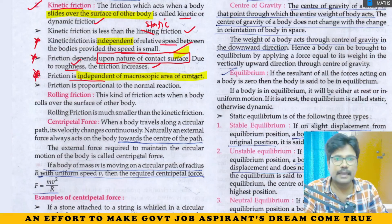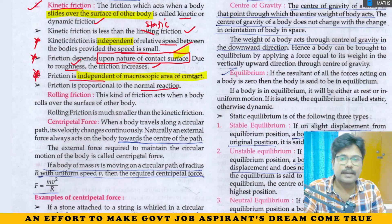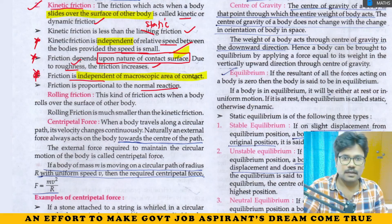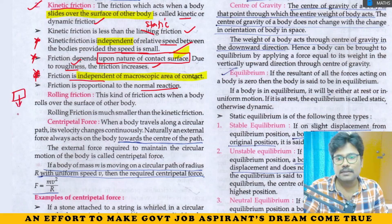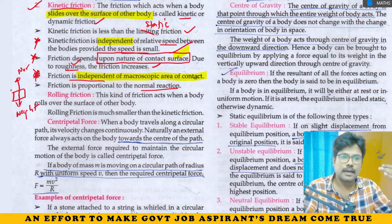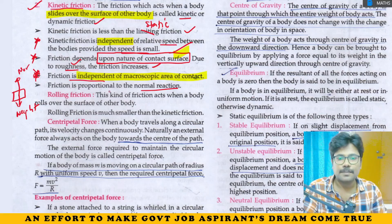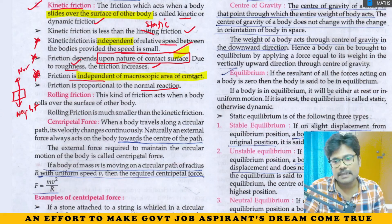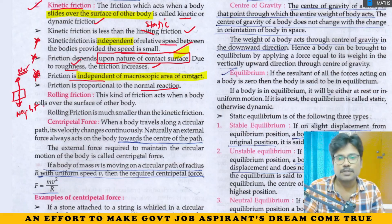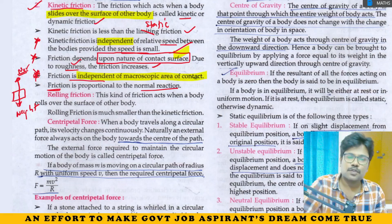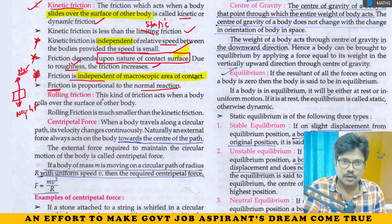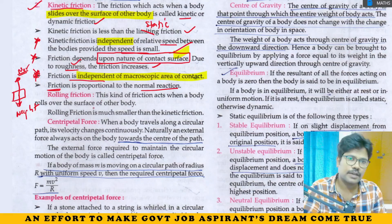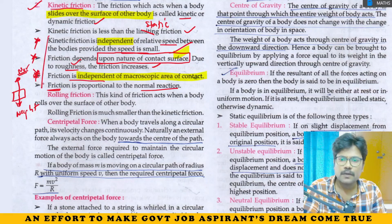Friction is independent of macroscopic area. Friction is directly proportional to the normal reaction. Normal reaction is the force opposite to the weight due to gravity. So friction F = μN, where μ is the coefficient of friction and N is the normal reaction. The proportionality constant μ is the friction coefficient.